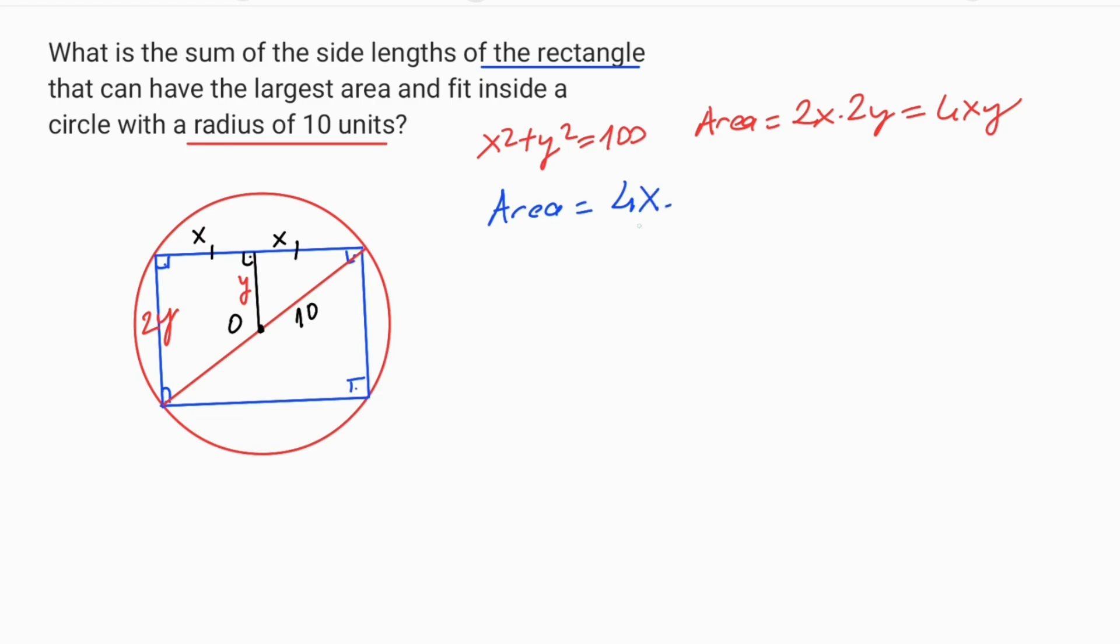So area equals 4x times, you can write in terms of y. If you use first equation, y equals square root 100 minus x squared. Then if you plug in this value instead of y, area equals 4x times square root 100 minus x squared.